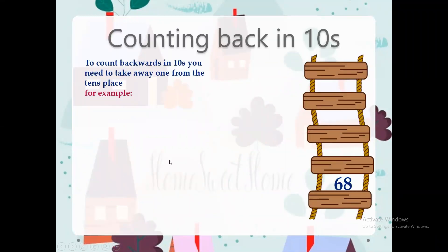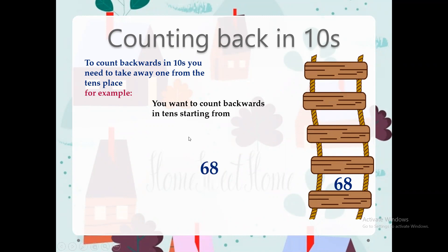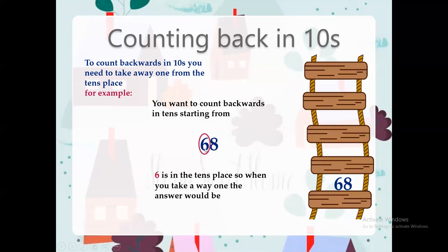Now to count backwards in tens, you need to take away one from the tens place. For example, you want to count backwards in tens starting from number 68. Six is in the tens place and eight is in the ones place. So we need to take away one from the tens place. If we take away one from six, what do you think? The answer would be 58.